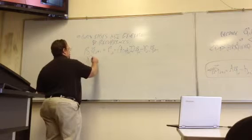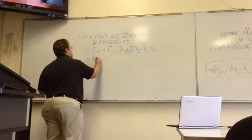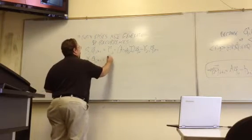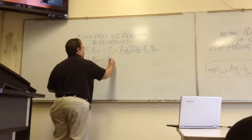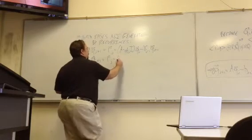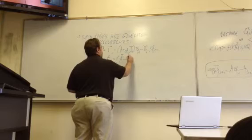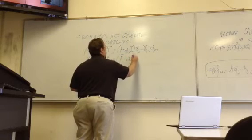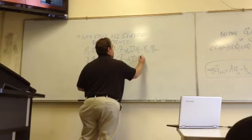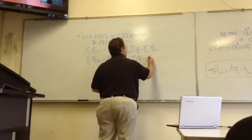I have gamma j, q hat j plus one, and so this right side I'll call this rj hat, and here I use a transpose. So each q hat depends on the previous two.